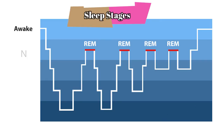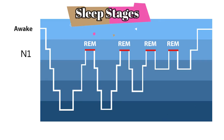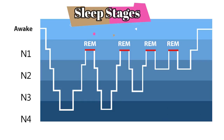We have four main stages of sleep, and once you sleep you can go down and up through these four stages. It goes from stage one through stage four — so stage one, stage two, stage three, stage four — and then you come back: stage four, stage three, stage two, stage one, and then continue like that.